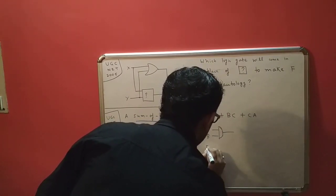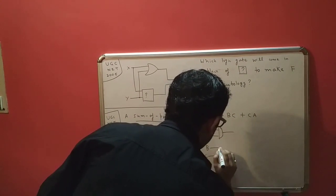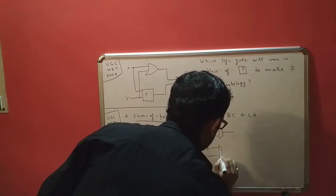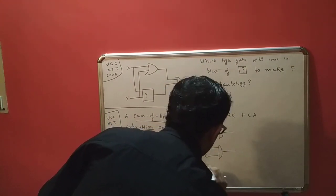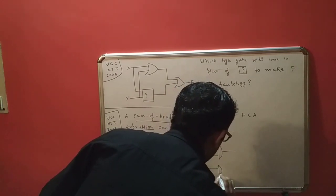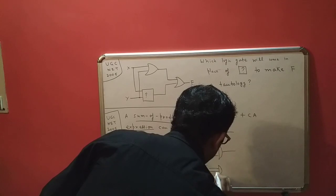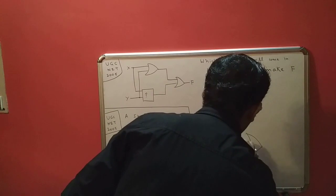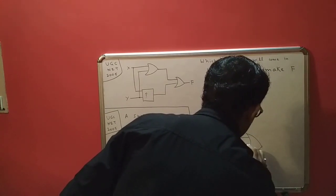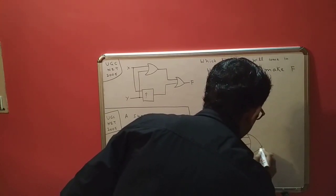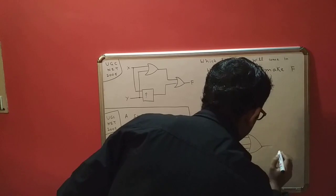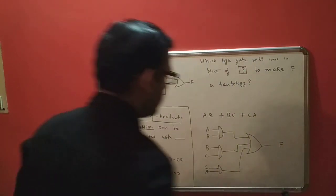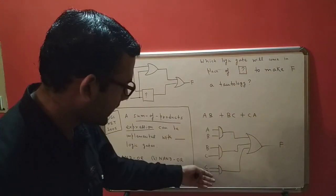So A and B can be passed through an AND gate. Similarly, B and C can be passed through another AND gate, and C and A can be passed through another AND gate. Finally, we can use a three-input OR gate to get the final output f.